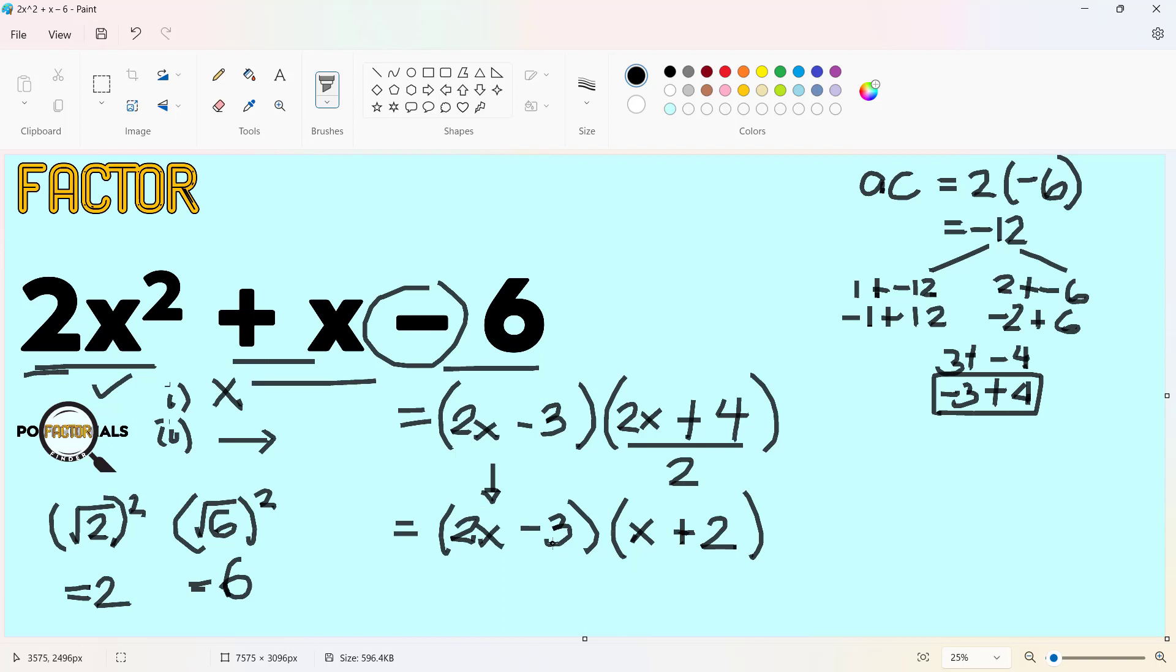And then finally, negative 3 times 2 is negative 6. So using this suggestion of mine, we're able to return to the correct factors of the given polynomial. And we solve this using the AC way because this given is no longer a perfect square trinomial.